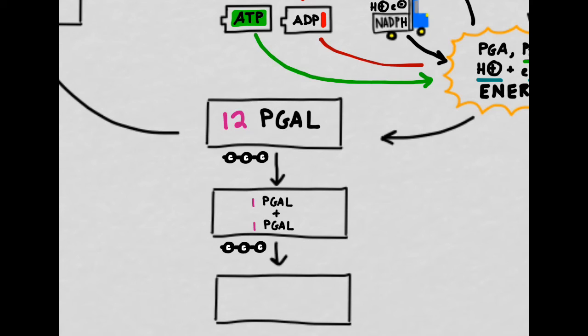Of the 12 PGAL we've created, we're going to borrow two of them to convert into a glucose molecule. One PGAL plus one PGAL equals one glucose.